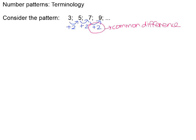So the 2 is the common difference. We refer to the terms of the pattern as the TN values and the position number of each term as the N value. So when we're talking about N in a pattern, we're talking about the position number. When we're talking about TN, we're talking about the term that is in that position.